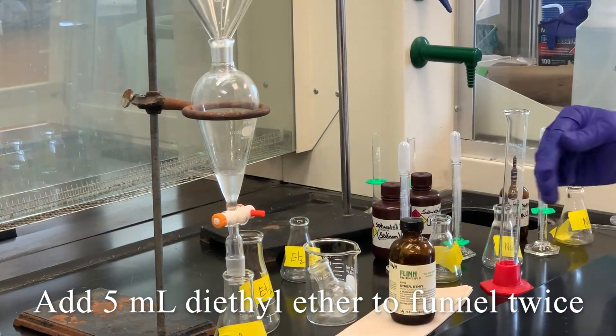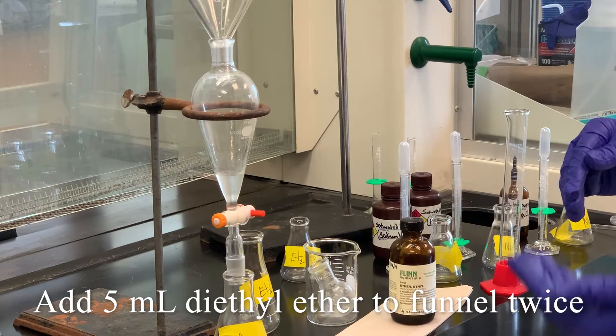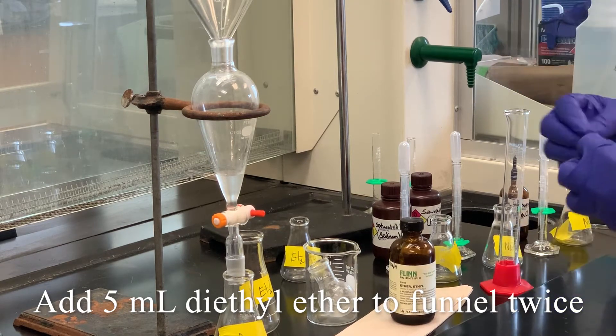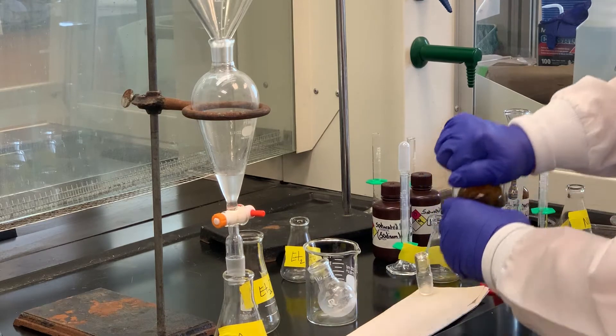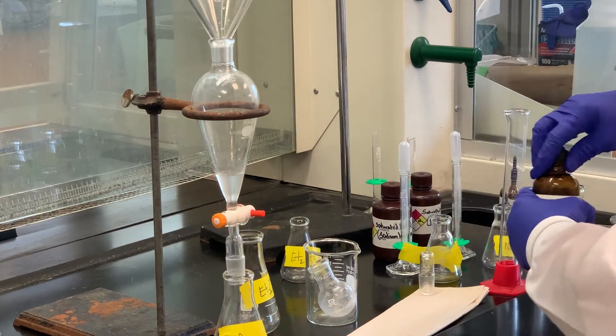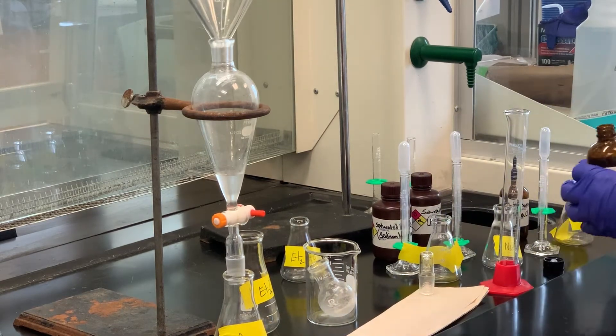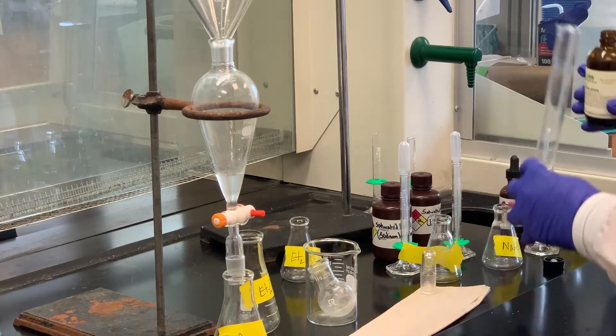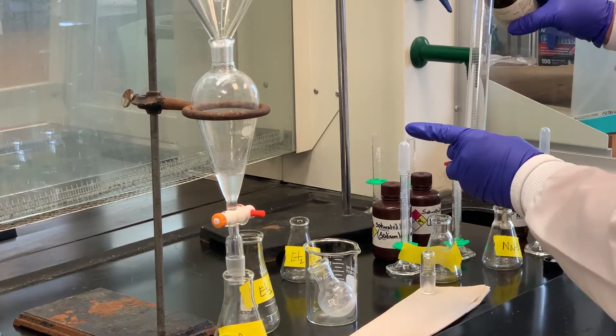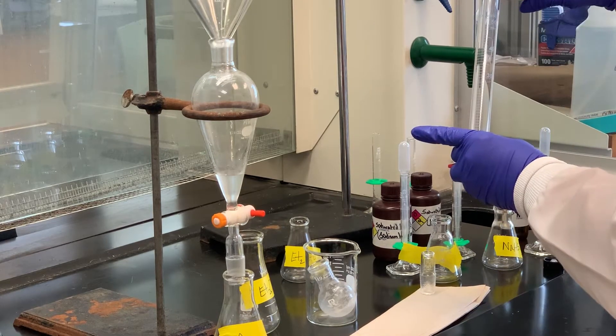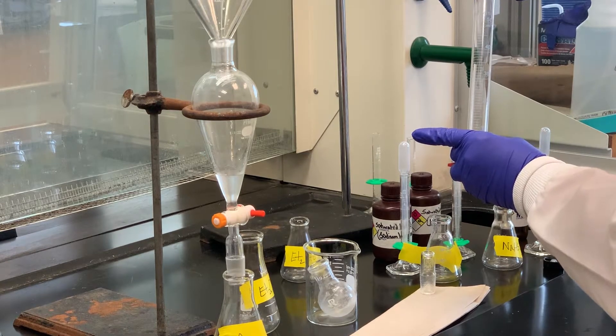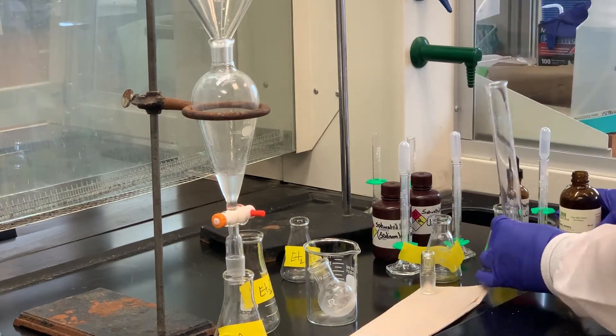Separate the layers. I want to wash that aqueous layer a second time with the ether and then combine the ether extracts together. So I'm going to measure out five milliliters, and if it's more than five, remember we're going to get rid of all of this. So if I add more than five, it's not the end of the world. That's close to five there.